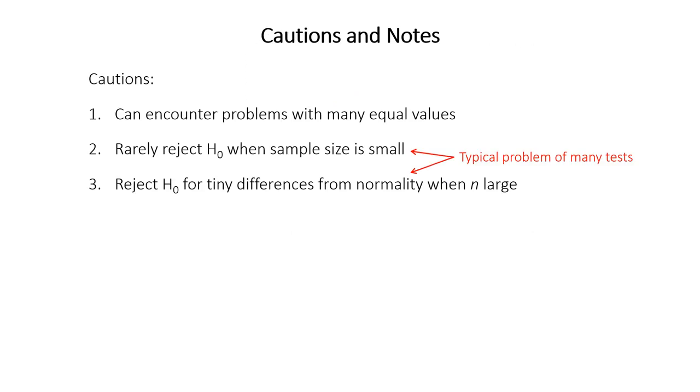All right. So first, a couple of cautions. Now, one thing to note is the test can sometimes run into problems if your data contain a lot of equal values. If there's a lot of tied values, a lot of duplicates. Now, there are other tests of normality it's not going to cover, but which you could check out if you're concerned about this.